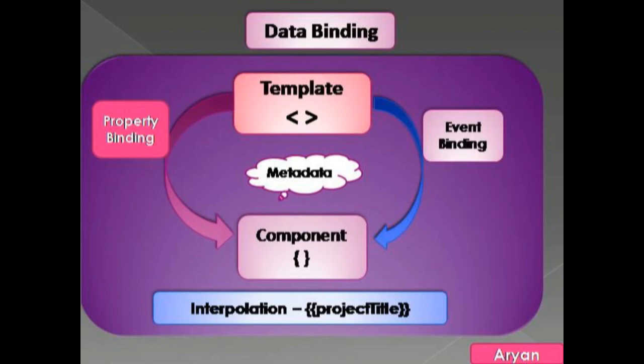The first type is Interpolation, which displays the component value within HTML tags — also called an expression in Angular 1.x. The second is Property Binding, which passes the value of a property from parent to child. The third is Event Binding, which fires an event when we click on a component method. The fourth is Two-Way Binding, which combines event and property binding in a single notation using the ngModel directive.